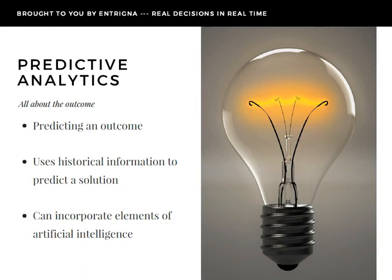In a predictive analytics solution, data is taken in and run through a model. That model takes information and compares it with the historical information for that customer or similar customers. Anomalies or patterns are searched for and outcomes are generated. Most of the time, only anomalies or patterns that match negative events are communicated. Predictive models can incorporate machine learning and learn from past behaviors to refine a model and make it more accurate.